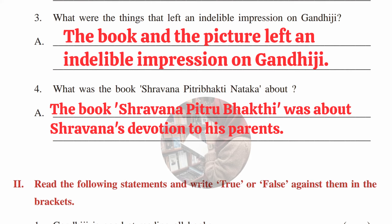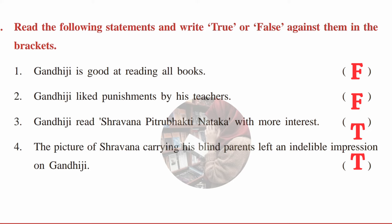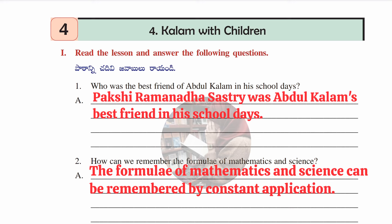Fourth question: what was the book Shravana Pitru Bhakti Nataka about? Answer: it was about Shravana's devotion to his parents. Second section — true or false: Gandhi Ji is good at reading all books: false; Gandhi Ji liked punishments by his teacher: false; Gandhi Ji read Shravana Pitru Bhakti Nataka with more interest: true; the picture of Shravana carrying his blind parents left an indelible impression on Gandhi Ji: true.